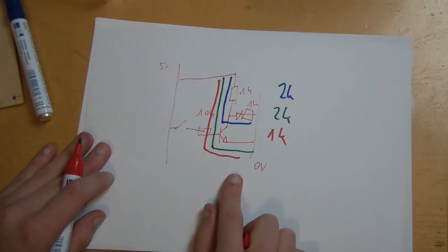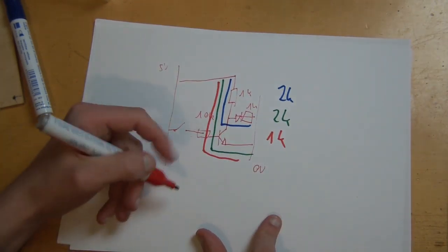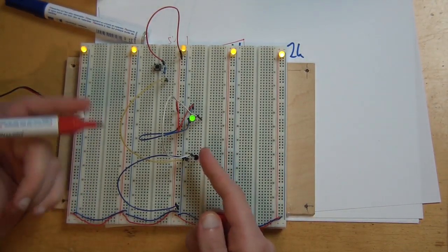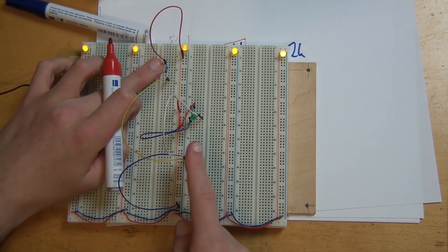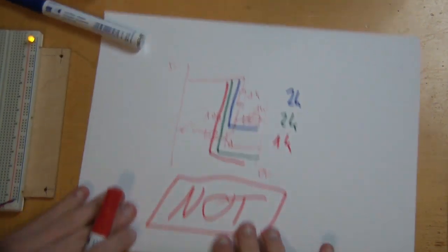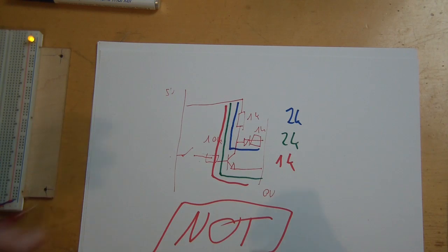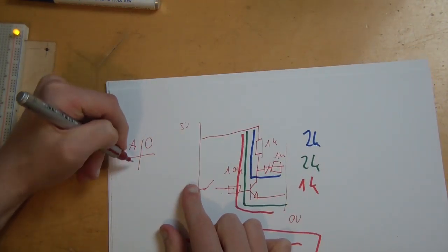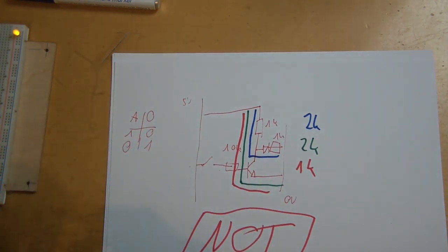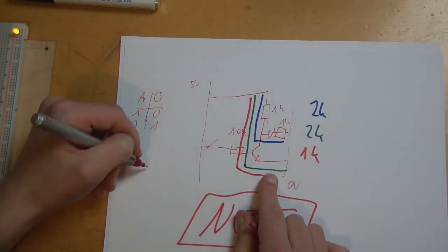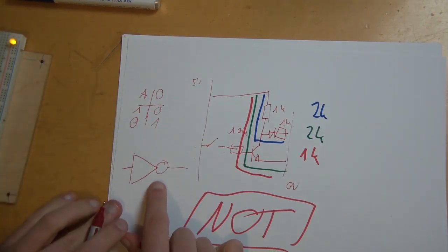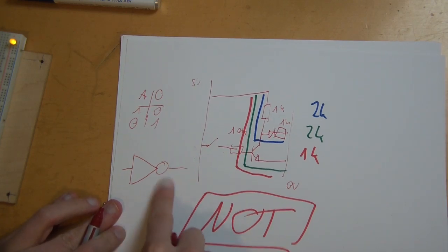This thing is called an inverter, or a NOT gate. And the reason is that it's always the opposite of the input. When the input is true, the output is false. When the input is false, the output is true. It's always the exact opposite. We can make a truth table. We have only input A and we have output. When input A is true, the output is false. When input A is false, the output is true. The way you write a NOT gate is a little triangle with a little circle. The circle always means NOT.